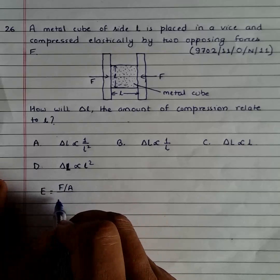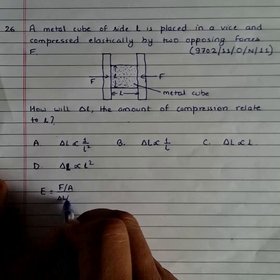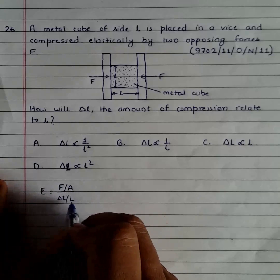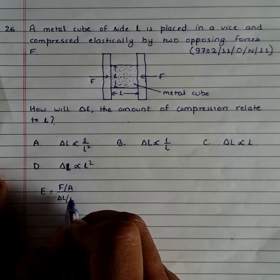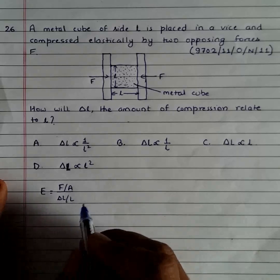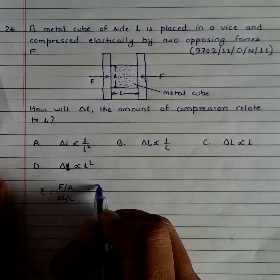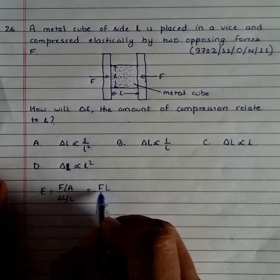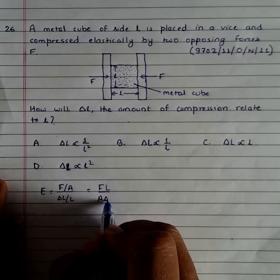And then it is ΔL by L. So this is the extension and this is the original length, and the whole expression is the strain. So we can arrange it as F*L = A*ΔL*E.